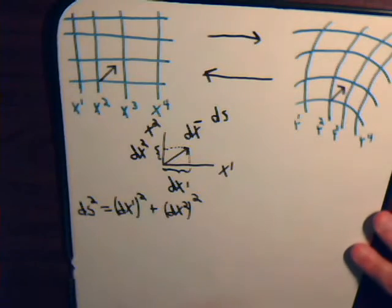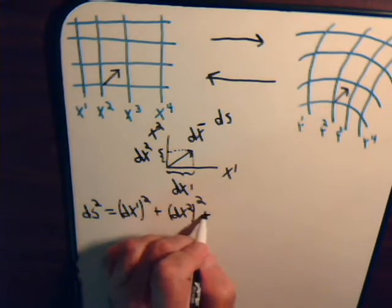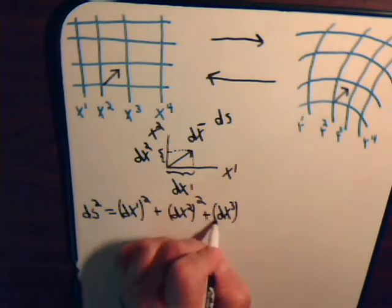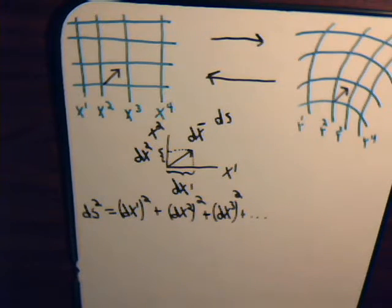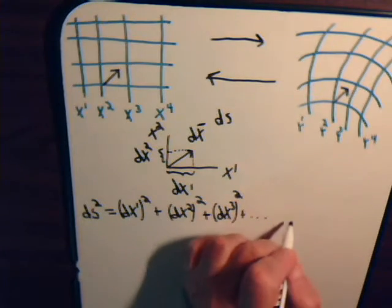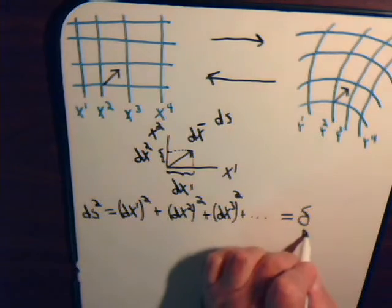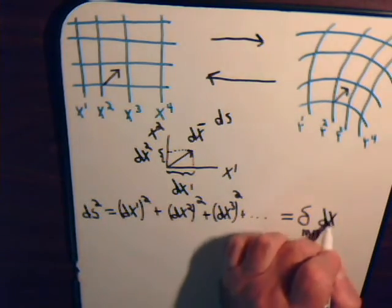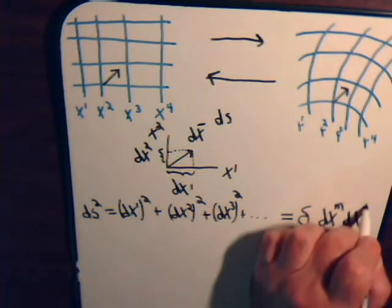Then, if we had more coordinates in our system, we could just keep writing dx3 squared and so forth. Well, there's a very succinct way that we can write all of this. See that this is equal to Kronecker delta mn dx^m dx^n.